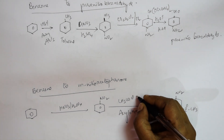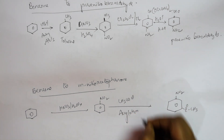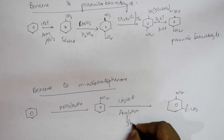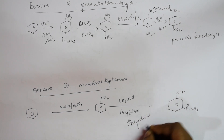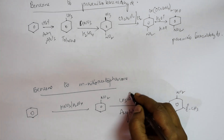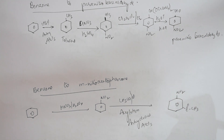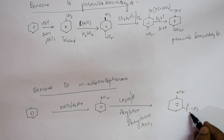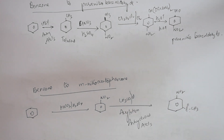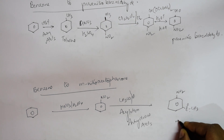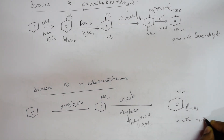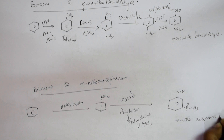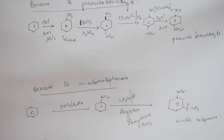Then perform Friedel-Crafts acylation using CH3COCl (acetyl chloride) in the presence of anhydrous AlCl3. The acyl group COCH3 attaches to give meta-nitroacetophenone. That completes the final conversion.